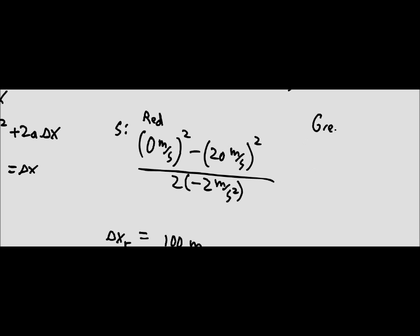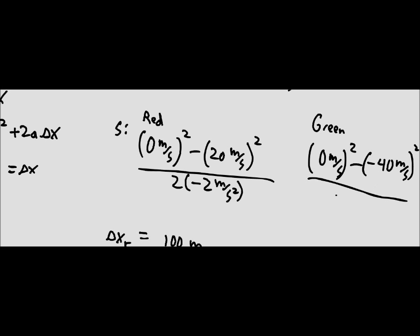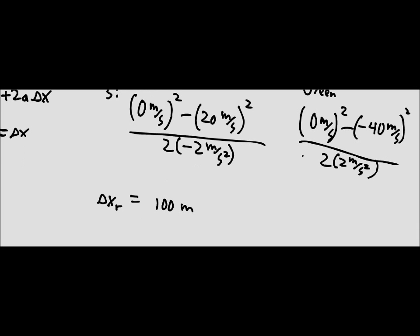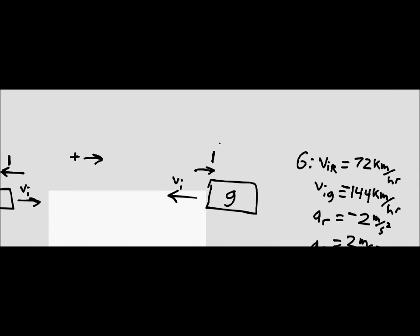For the green train, we have zero minus negative forty meters per second, squared. Since we're squaring the velocity, the negative doesn't matter. Divided by two times the positive acceleration. What we find for the change in x for the green train is negative four hundred meters — the negative just tells us direction, meaning it moves four hundred meters from its starting position toward the red train.